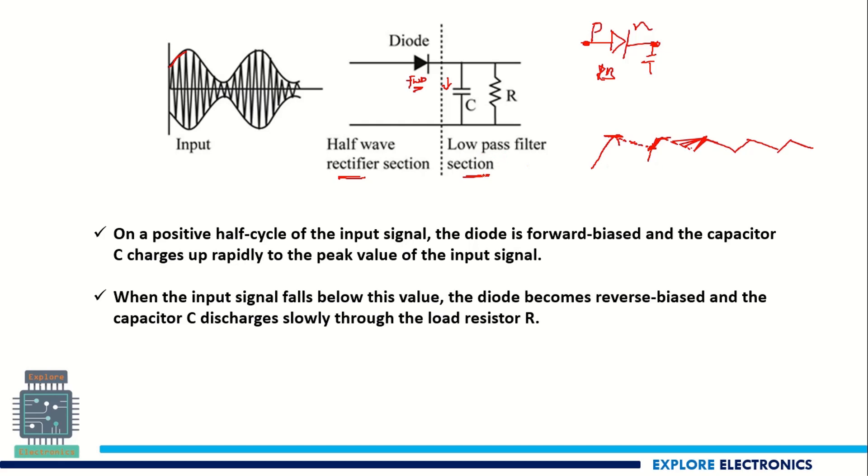So this is how we are going to get the output. And because of the low pass filter at the second section, the RC, it is going to eliminate the high frequency components present in the modulated signal. So the half wave rectifier section and a simple low pass filter is used here to get back the message signal from the AM wave.